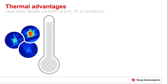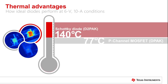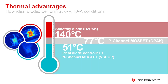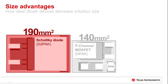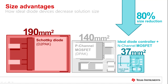At 6, full, and 10 amp conditions, discrete alternatives like a Schottky diode or a p-channel MOSFET solution run at very high temperatures. The TI ideal diode and external MOSFET combination run significantly cooler, providing a 63% decrease in temperature. In a comparison of the same three solutions, the ideal diode controller arrangement is substantially smaller — that's an 80% reduction in size compared to its discrete diode alternative.